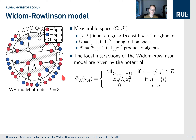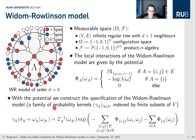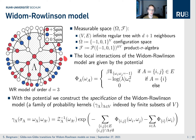Now we have the Widom-Rowlinson potential, which gives us a so-called specification. This is a family of probability kernels, and you can think of them as conditional probabilities. The conditional probability to find a specific configuration in the region lambda, if we fix the exterior spins, is given by the exponential of the sum of all these interactions in lambda or between lambda and the exterior. There are two types: we have a repulsion parameter beta,